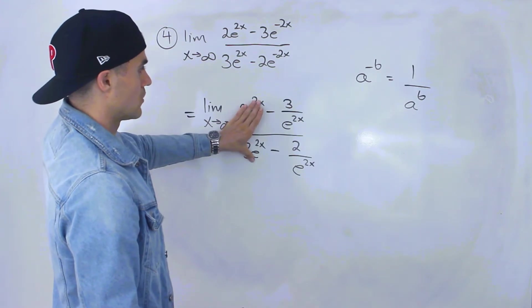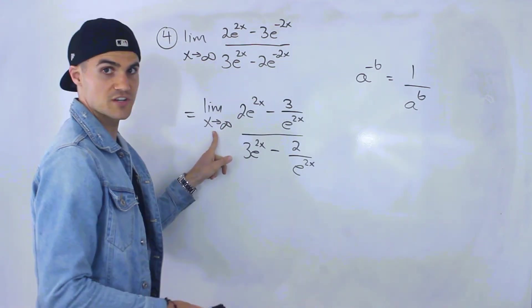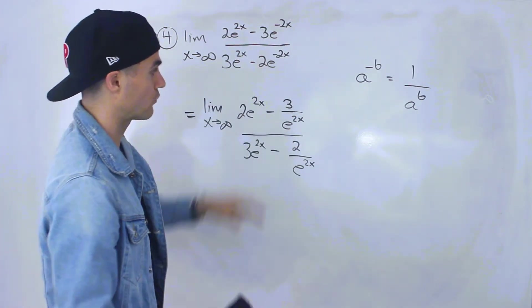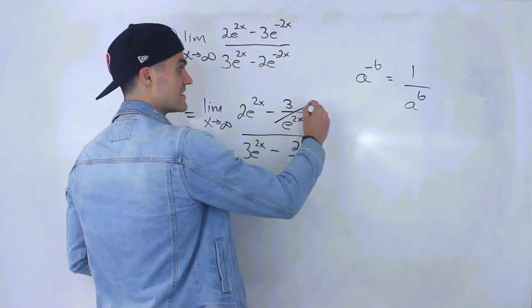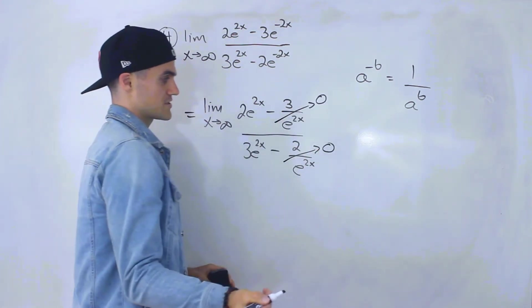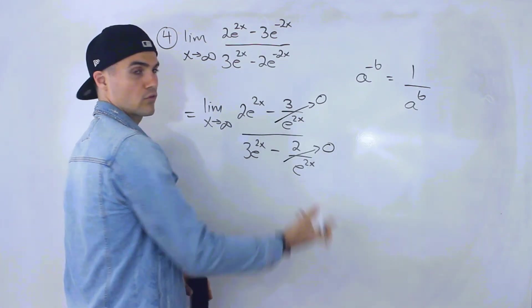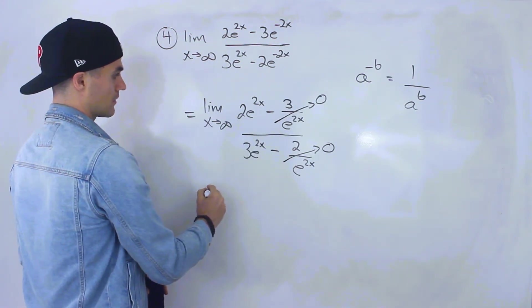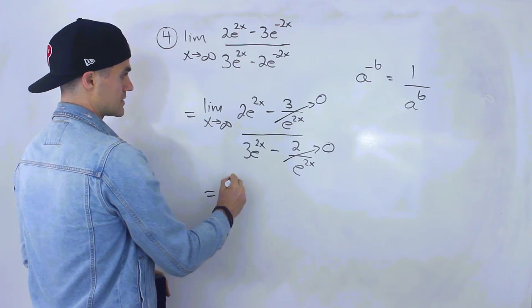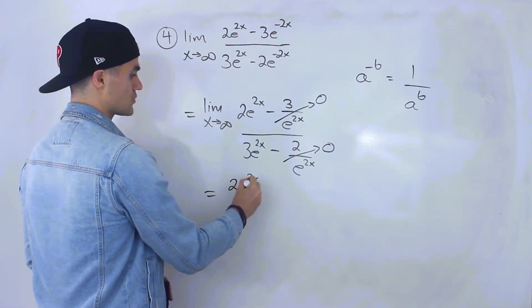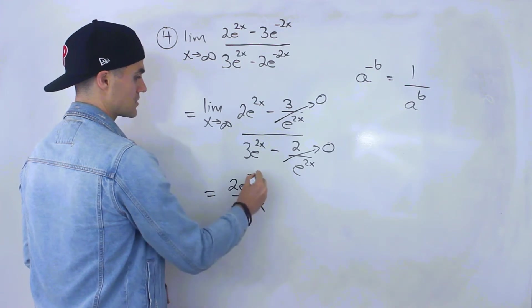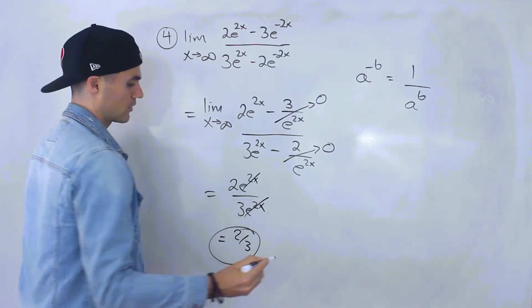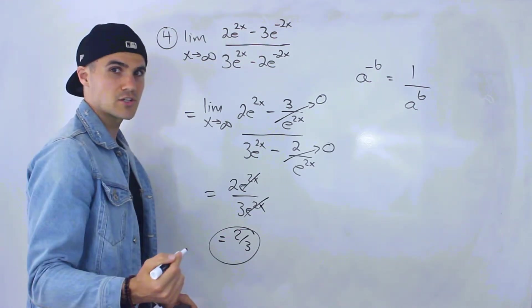One way to evaluate this: as x goes towards infinity, 3 over e^(2x) goes to zero and 2 over e^(2x) goes to zero. So the function approaches 2e^x over 3e^x, and those e^x terms cancel, leaving 2 over 3.